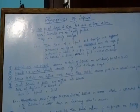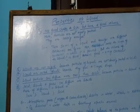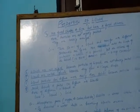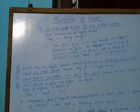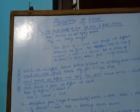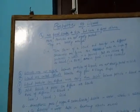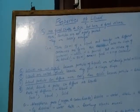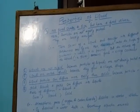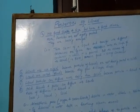Next are the properties of liquid. The first property of liquid is that liquids have no fixed shape and size but they have a fixed volume. This is because the particles are not tightly packed as in solids — they are loosely arranged — and that's why they have no fixed shape.